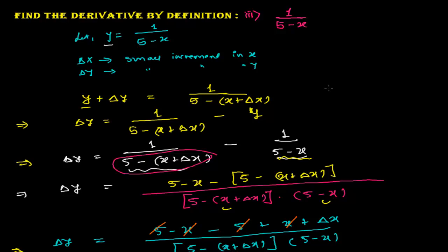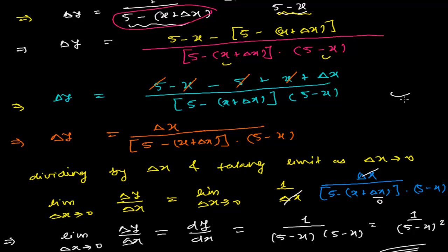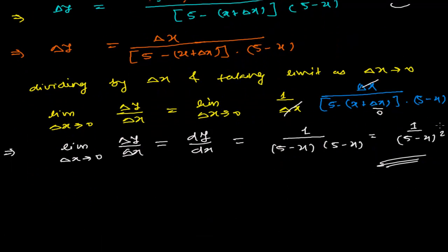So this is how we solve these problems. The process is the same everywhere: make a small increment in x and y, put delta y on the left side and everything else on the right, cancel what cancels, divide by delta x, take the limit as delta x tends to 0, plug in the value, and get the answer.